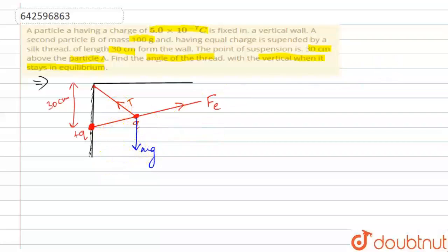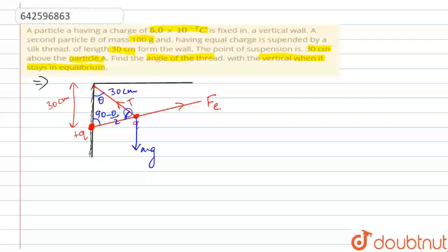Suppose the thread makes angle theta with the vertical. Since the two sides of the triangle are both 30 centimeters, the triangle is isosceles. The sum of interior angles is 180 degrees, so the base angles are each 90 minus theta by 2. Both base angles are equal since the two sides are equal.